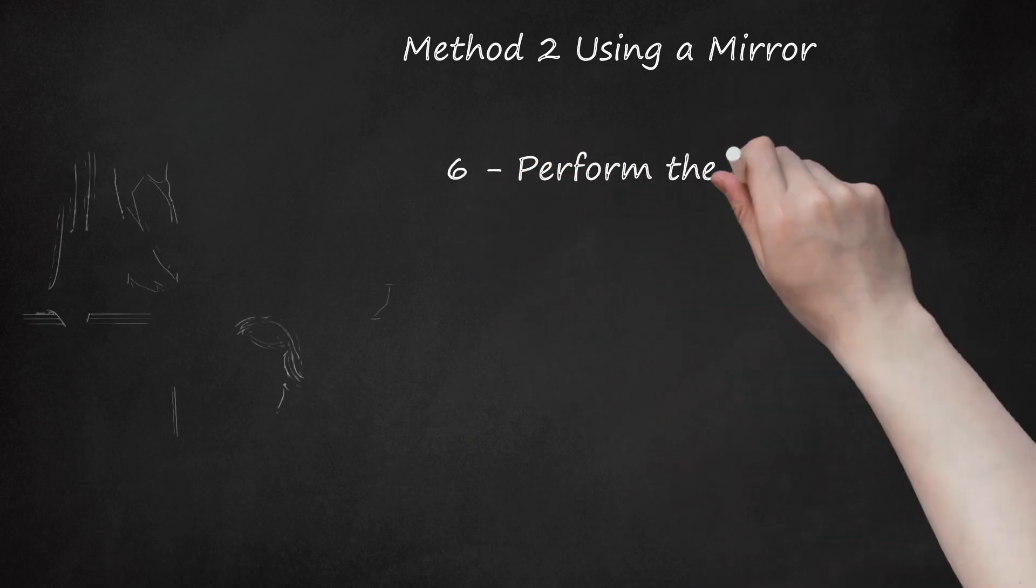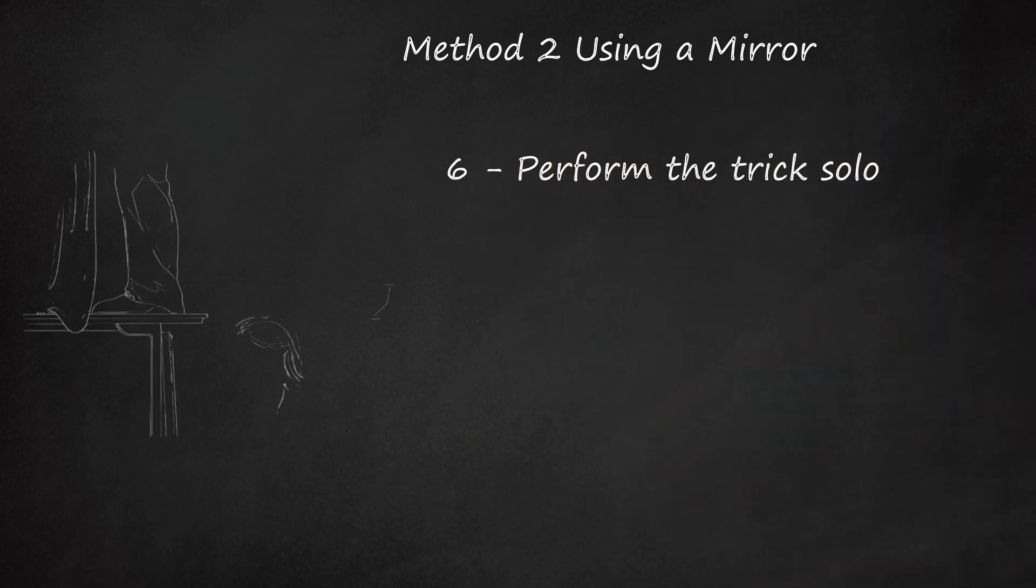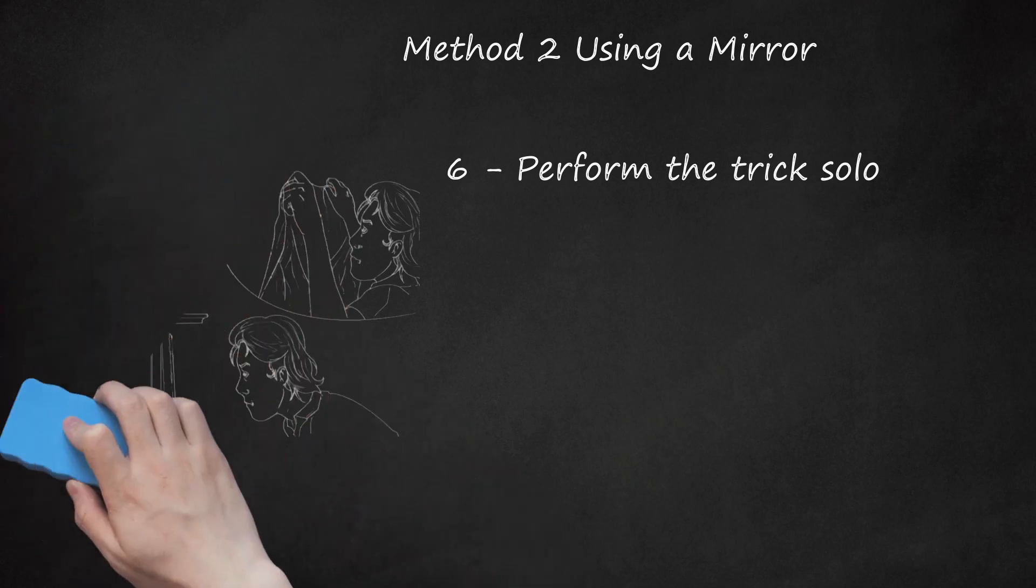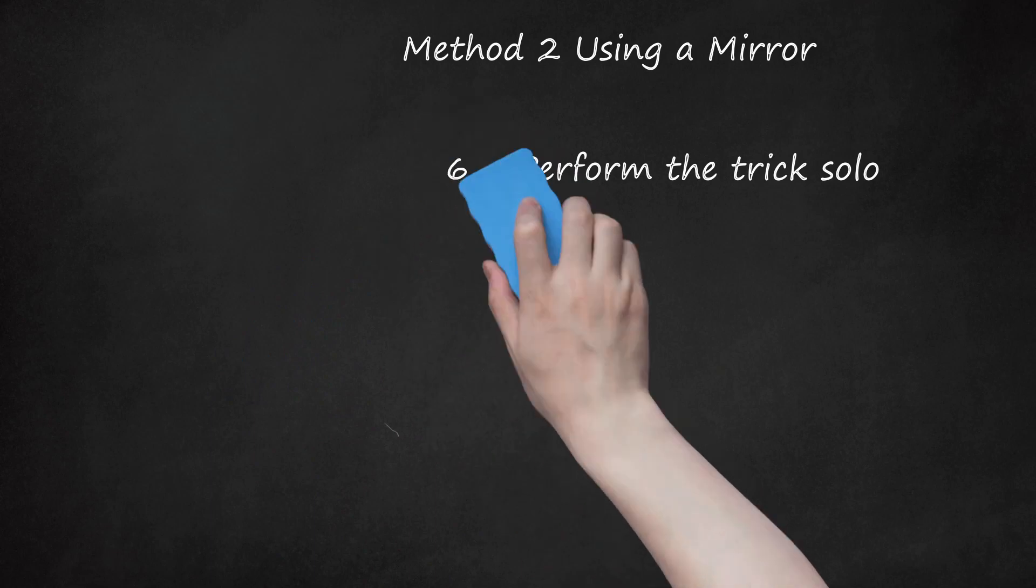Step 6 - Perform the Trick Solo. Stand on top of the table with a blanket in your hands. Make sure you stand close to the edge of the table. Raise the blanket above your head. Say some magic words if you want. Then jump off the table and land in a crouching position behind the mirror. Let the blanket naturally drop with you and release your grip once you hit the ground.